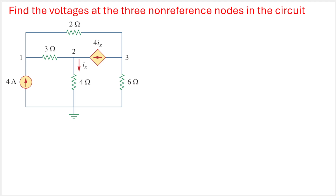The question is: find the voltages at the three non-reference nodes in the circuit. A non-reference node is any node that is not the reference — the ground. The reference node is the ground, where voltage equals zero. We need to find the voltage at node 1, node 2, and node 3. The first step is to label the nodes, which we have already done.